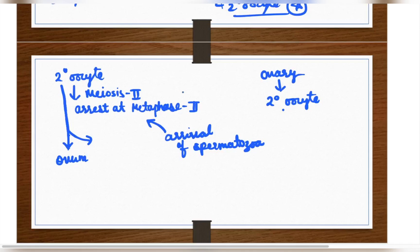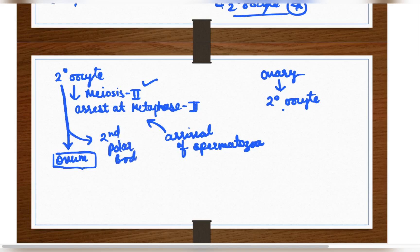When the spermatozoa arrive, the secondary oocyte completes meiosis 2 and forms the ovum. This division is also asymmetric — the first cell is the ovum, which is the larger cell and has all the cytoplasm and the nucleus. Along with the ovum a second polar body is formed, which will also degenerate because it has only a small amount of cytoplasm and no nucleus at all. Completion of meiosis 2 gives you the ovum — the mature egg.